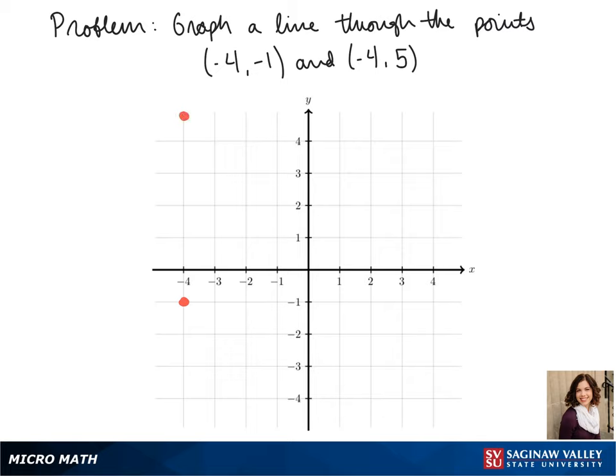When we connect our points, we see that our line is a vertical line. Notice that we have the same x values, and we get a vertical line.